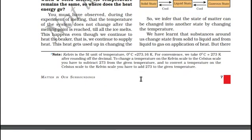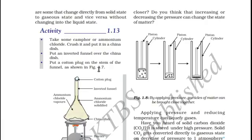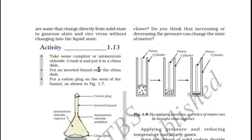And there is one more interesting fact to note. We have seen substances around us changing state from solid to liquid and from liquid to gas. But there are some substances which directly change from solid to gas. One example of this is naphthalene. Naphthalene balls are generally placed where we keep clothes to keep away from cockroaches. Those naphthalene balls convert from solid state directly to gaseous state. The process of converting solid state to gaseous state, and vice versa, is known as sublimation.